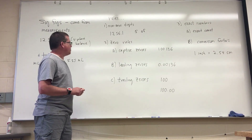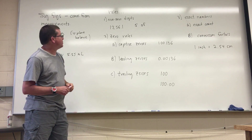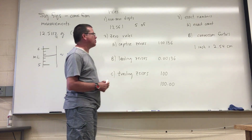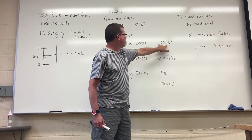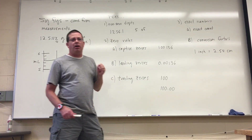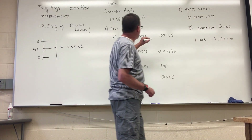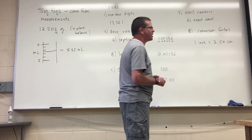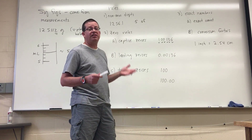The next set of rules deals with zeros. The first subset concerns captive zeros. By definition, captive zeros are zeros found between non-zero digits. The rule is: all captive zeros are considered to be significant. So for example, the one, both zeros, the one, and the six are all significant — giving a total of six significant figures in that number.